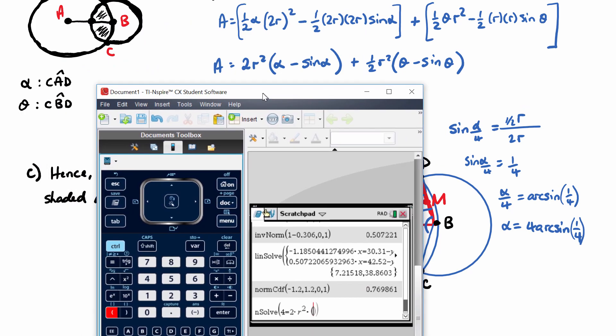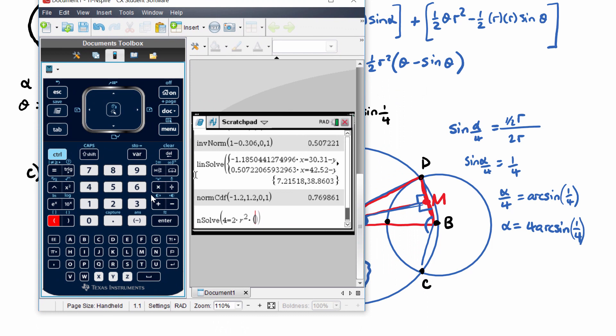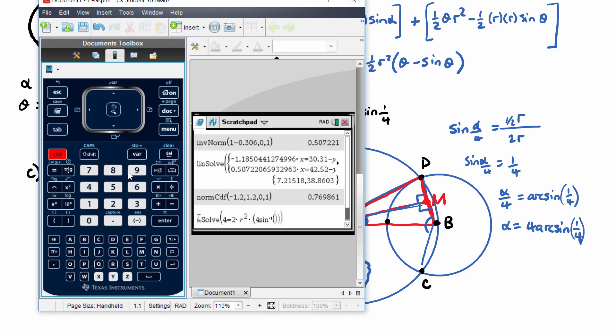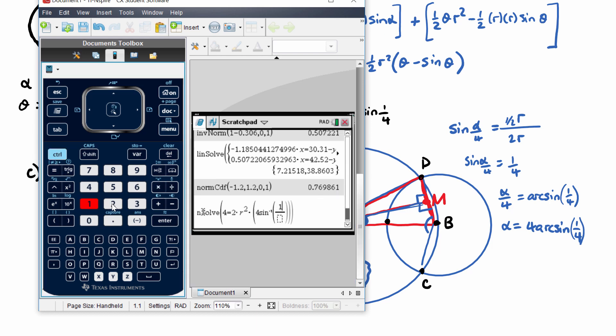Now alpha minus sine of alpha. So alpha we do know is 4 arc sine. And I'm just going to put 1 on 4. This is going to get quite a lot of brackets here.